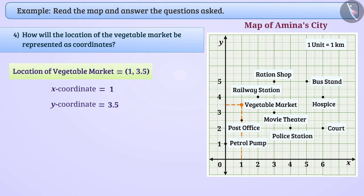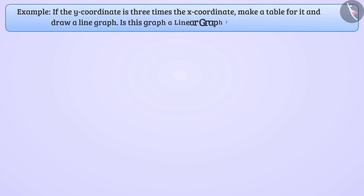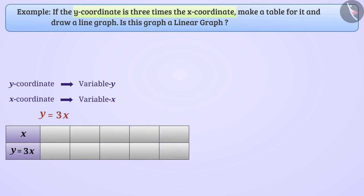Next example: if the y-coordinate is 3 times the x-coordinate, let's make a table for it and draw a line graph. Is the line graph a linear graph? Let's represent y-coordinates with variable y and x-coordinates with variable x. We are told that the y-coordinate is 3 times the x-coordinate, so we can say that y = 3x. Let's make a table from this.